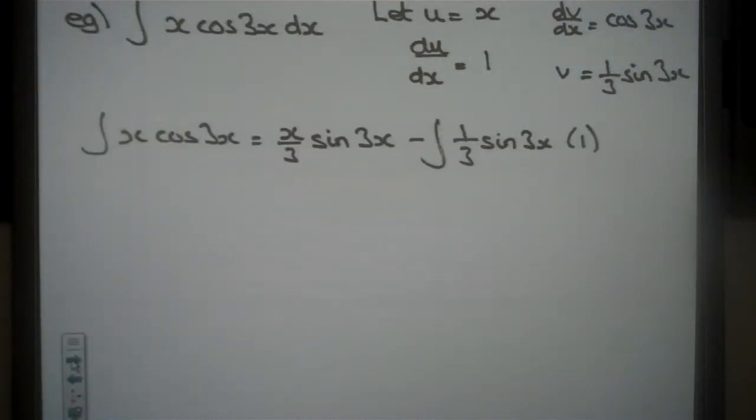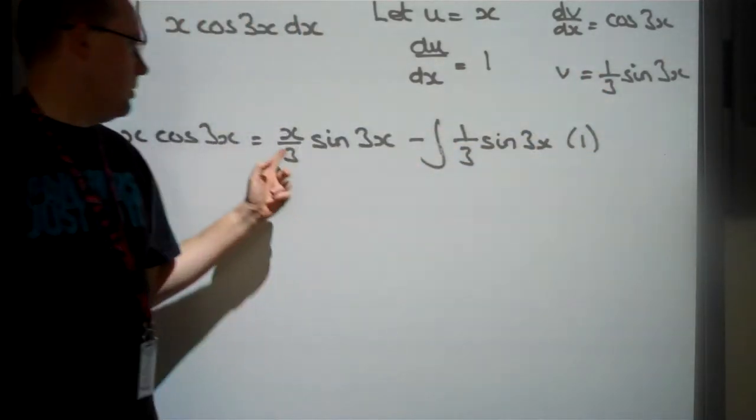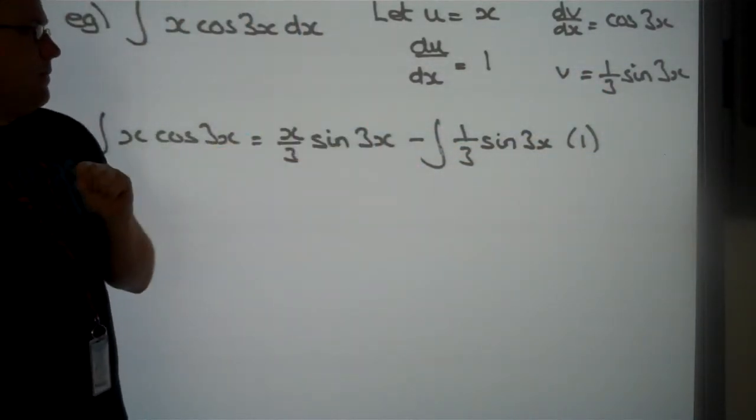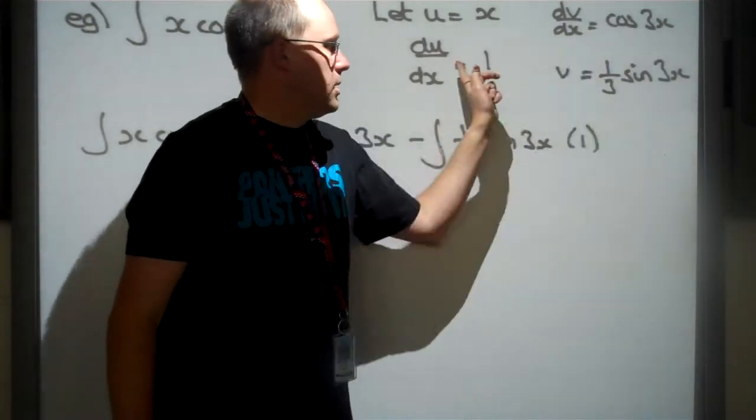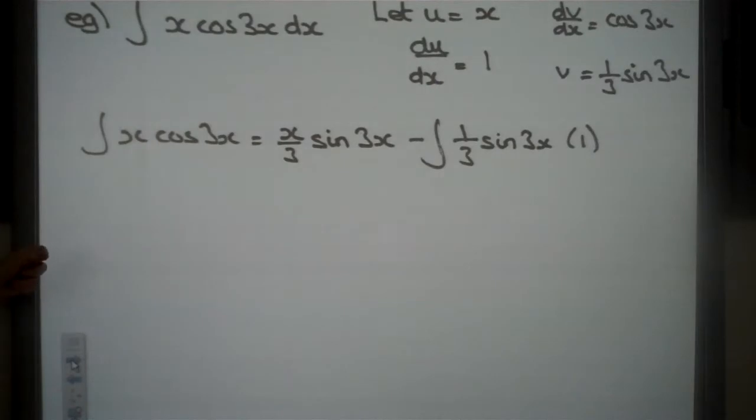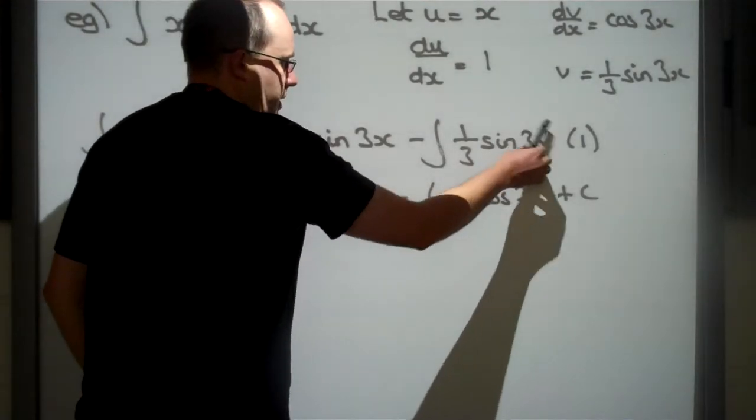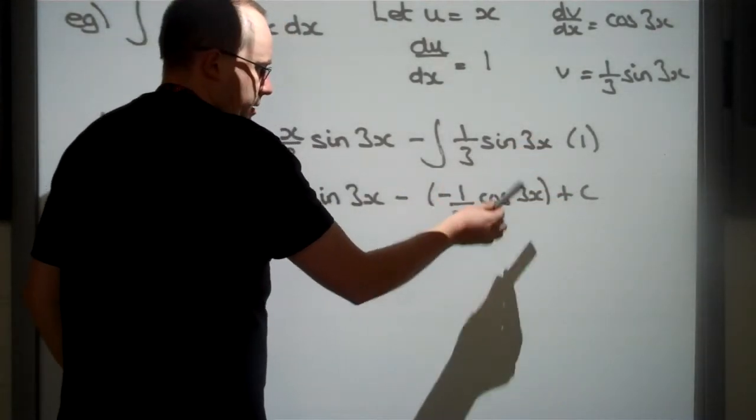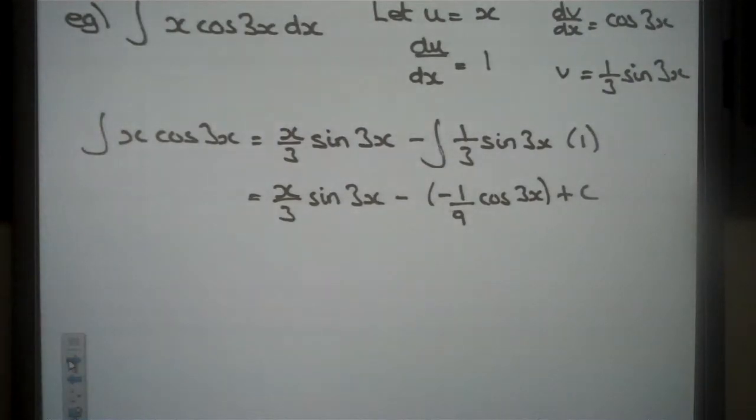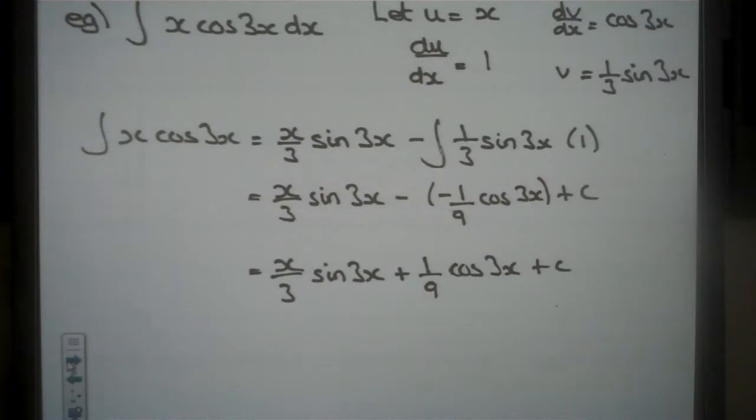So if we use our integration by parts formula, the formula is u times v. So x times one third is one third x sine 3x minus the integral of v du. So this times this and as we times it by one, that's not actually going to have any effect at all. The integral for sine is negative cosine. We also have to divide by the derivative of 3x so when we divide by another 3 we're going to get one ninth. And if we simplify here, the two negatives are going to combine to give us a plus.